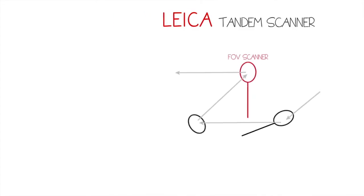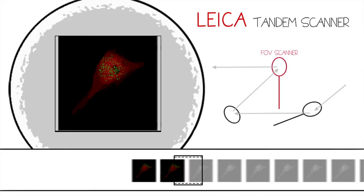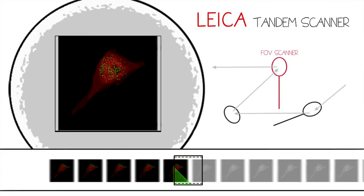The Leica TCS SP8 combines the FOV scanner for the widest field of view and image format with the second high-speed resonance scanner.